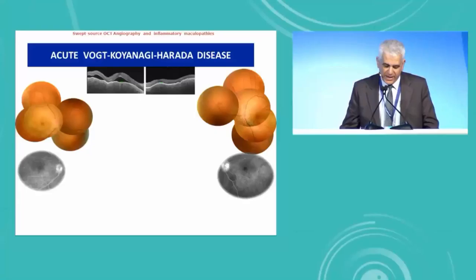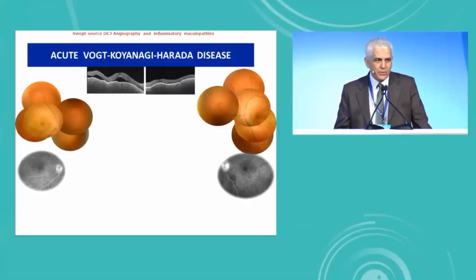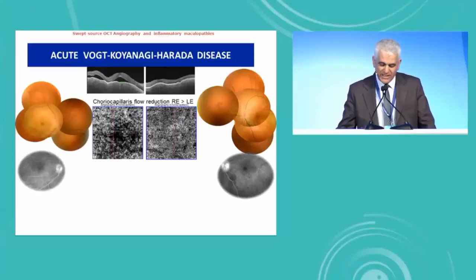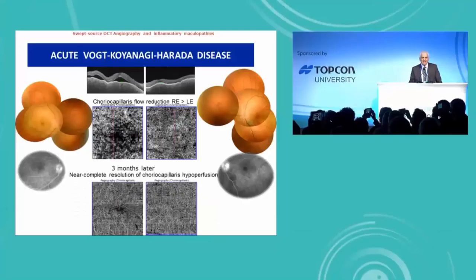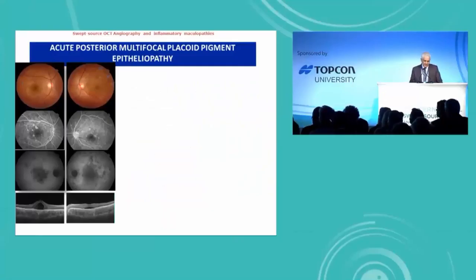The first case is a typical case of acute Vogt-Koyanagi-Harada disease. Diagnosis can be made based on typical clinical features and OCT and fluorescence angiography findings. The OCT angiography shows choriocapillaries flow reduction mainly in the right eye, and three months after treatment, near-complete resolution of choriocapillaries hypoperfusion.